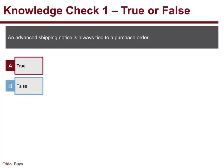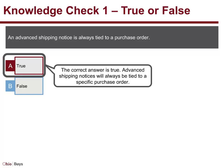Knowledge Check 1. True or False: An Advanced Shipping Notice is always tied to a Purchase Order. The correct answer is True. Advanced Shipping Notices will always be tied to a specific Purchase Order.